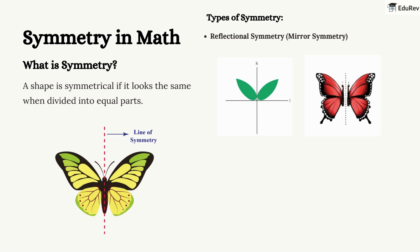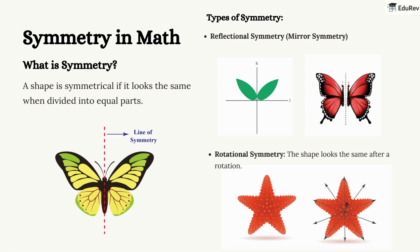There are two types of symmetry. Reflectional symmetry - this is like a mirror image. Rotational symmetry - this happens when a shape looks the same after turning it. Symmetry is everywhere around us.